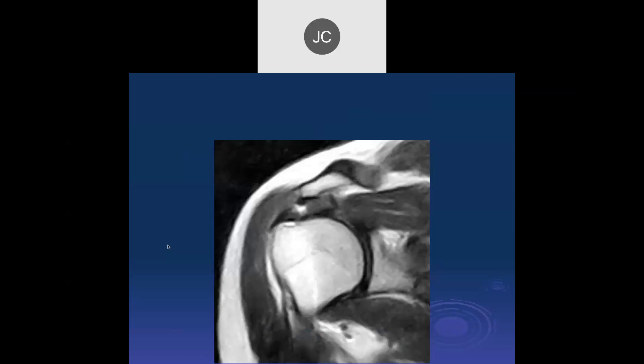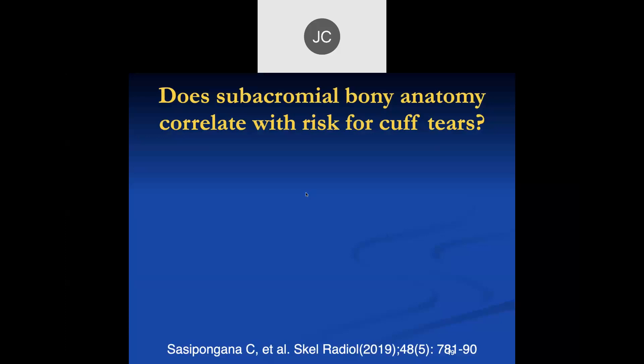Here's a case that fits Neer's initial hypothesis: an inferior acromial osteophyte and a bursal-side partial tear of the supraspinatus tendon — possibly associated with impingement. But as noted, most studies show this association is not common.